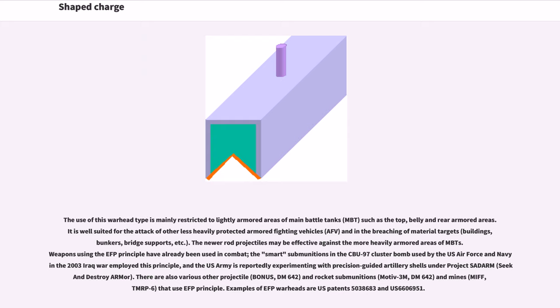There are also various other projectile, BONUS, DM-642, and rocket submunitions, MOTIV-3M, DM-642, and mines, MIFF, TMRP-6, that use EFP principle. Examples of EFP warheads are U.S. patents 5,038,683 and U.S. 6,606,951.